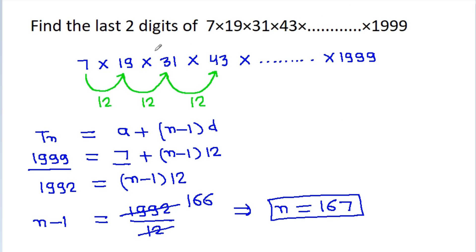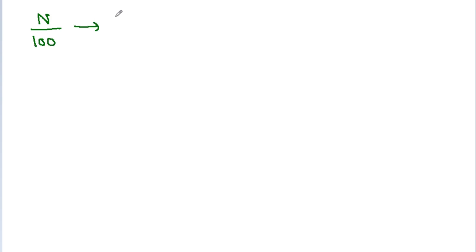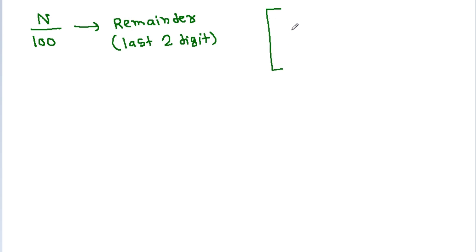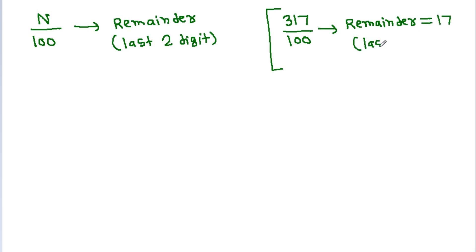But we have to find the last two digits. If we divide any number N by 100, then the remainder gives the last two digits. For example, if we divide 317 by 100, the remainder is 17, which are the last two digits.